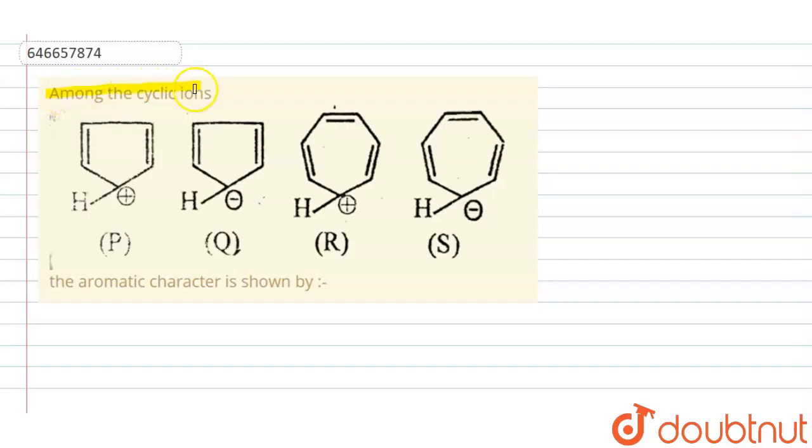Among the cyclic ions, the aromatic character is shown by. These are the four options available.